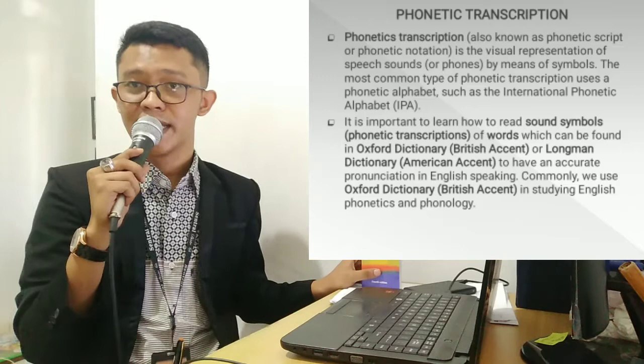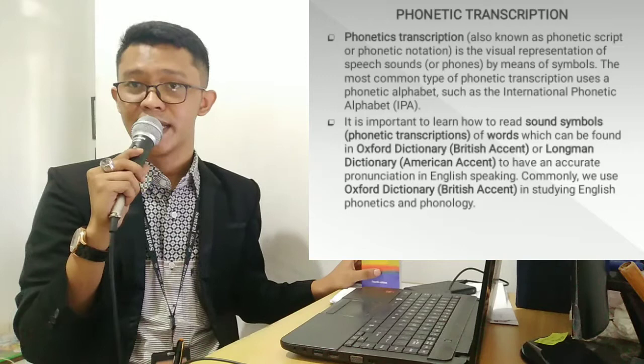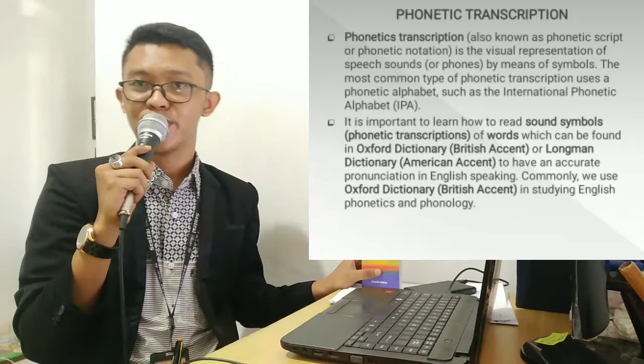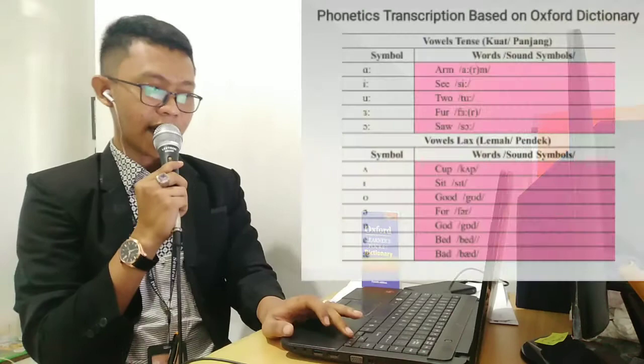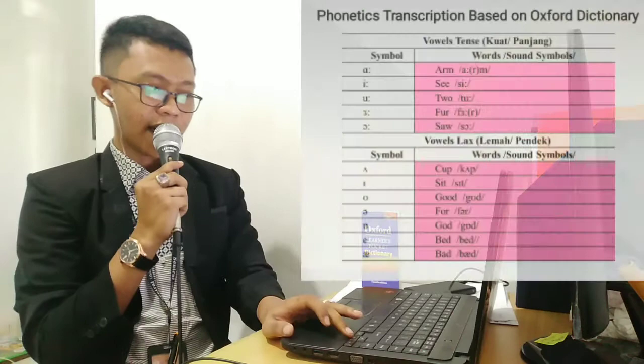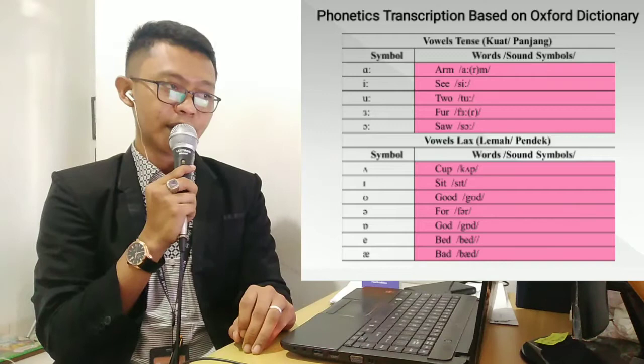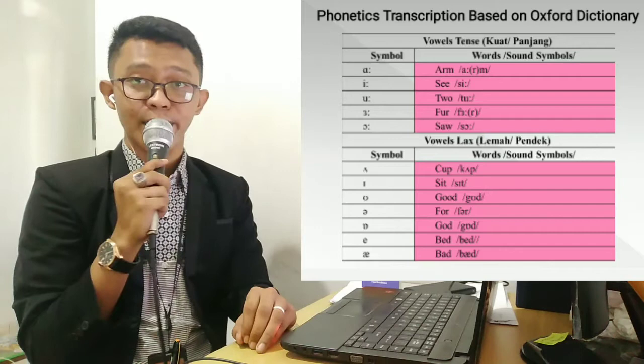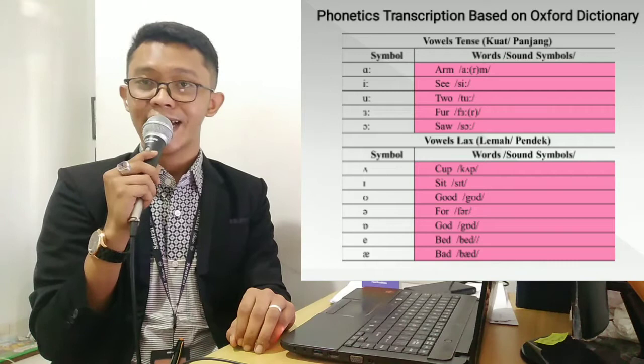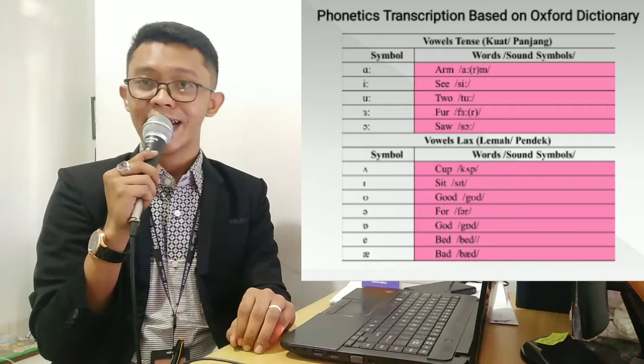Kalau semua accent dibahas, nanti akan membingungkan, karena perbedaan sound simbol itu banyak sekali antar accent. That is the explanation about phonetics transcription. Next, we go to the next slide — slide ketiga — phonetics transcription based on Oxford dictionary, yang dicontohkan dalam tabel berwarna pink. Saya ingin memberikan contoh bagaimana membaca phonetics transcription atau sound simbol pada kata. Yang pertama ada kata 'arm.'